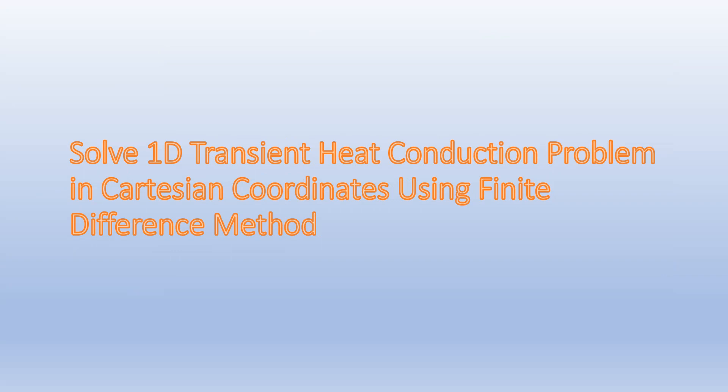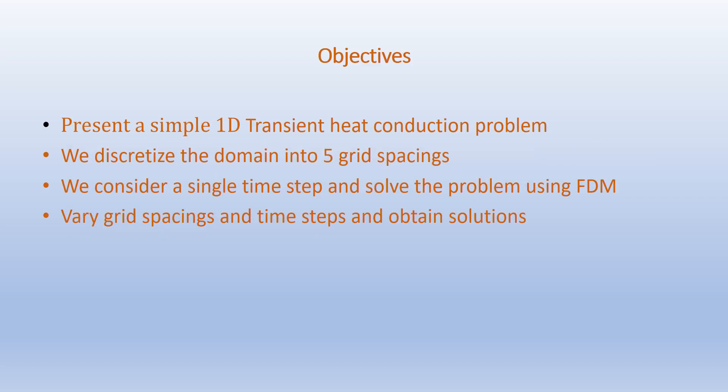In the previous videos we solved 1D steady-state heat conduction problems in Cartesian coordinates with and without heat generation terms using the finite difference method. In this video we are going to solve a 1D transient heat conduction problem in Cartesian coordinates using the finite difference method. Our objectives are to present a simple 1D transient heat conduction problem, discretize the domain into five grid spacings, consider a single time step, and solve the problem. We will then vary the grid spacings and time steps and obtain solutions using software such as MATLAB.